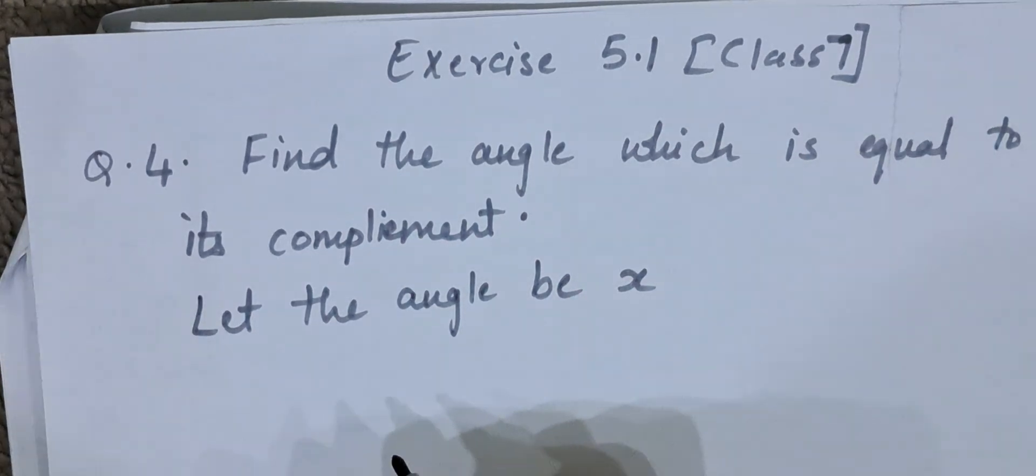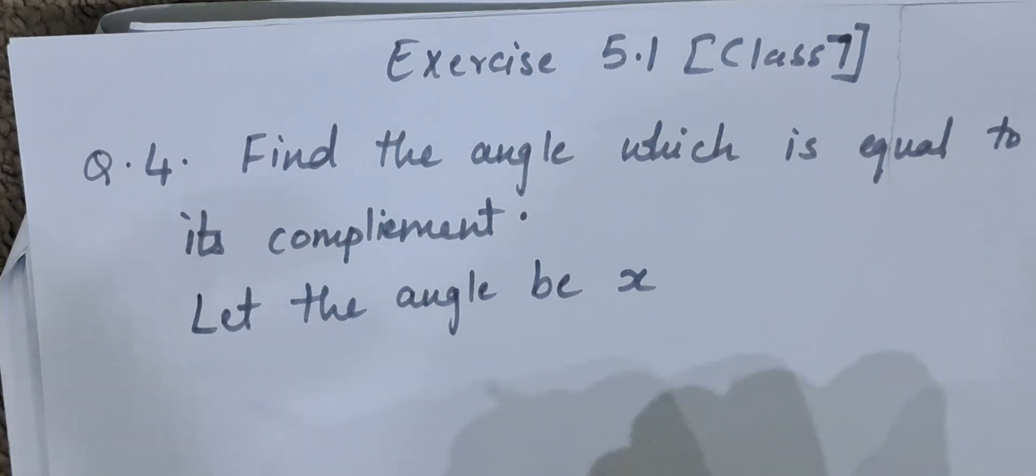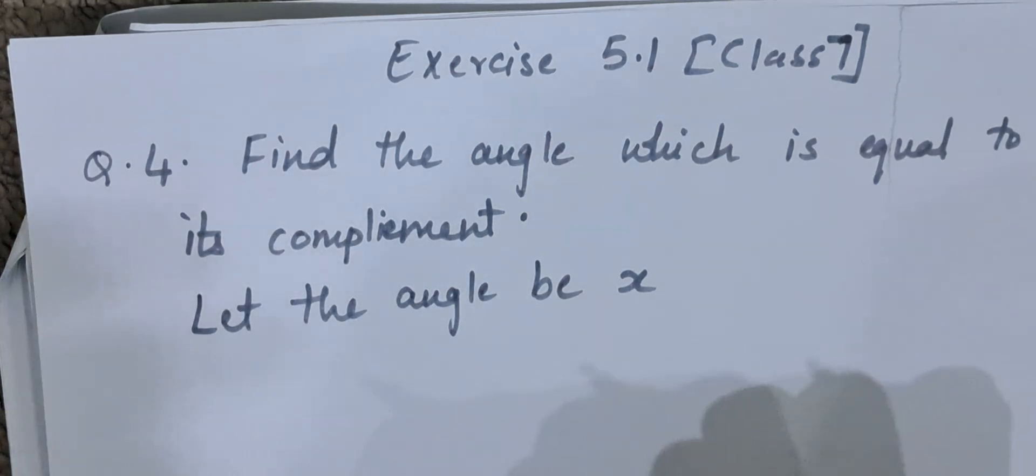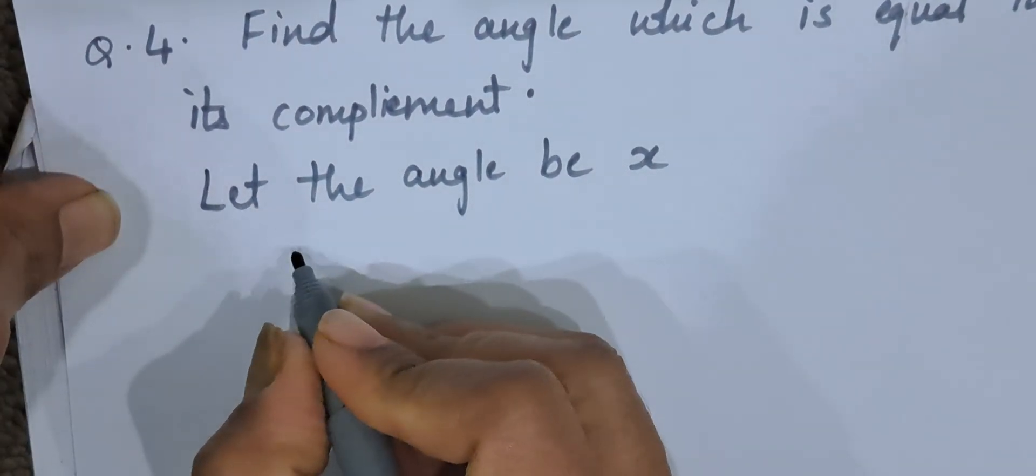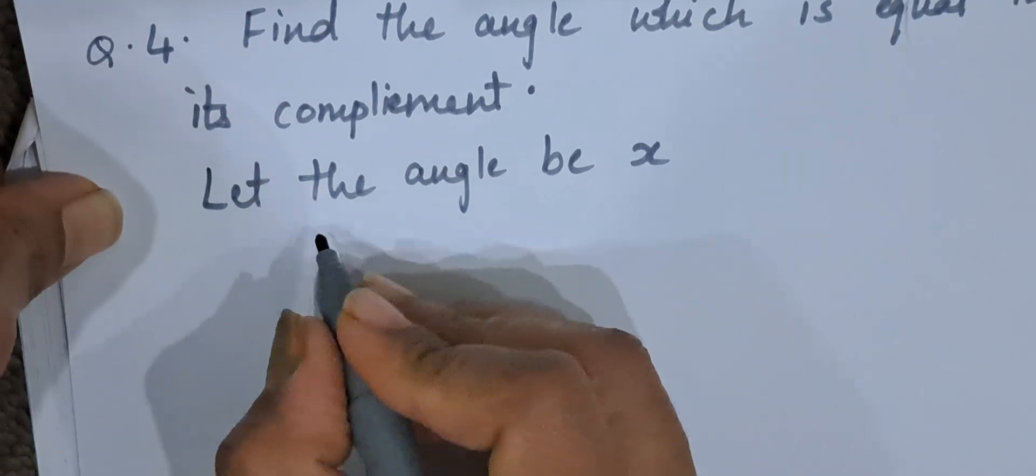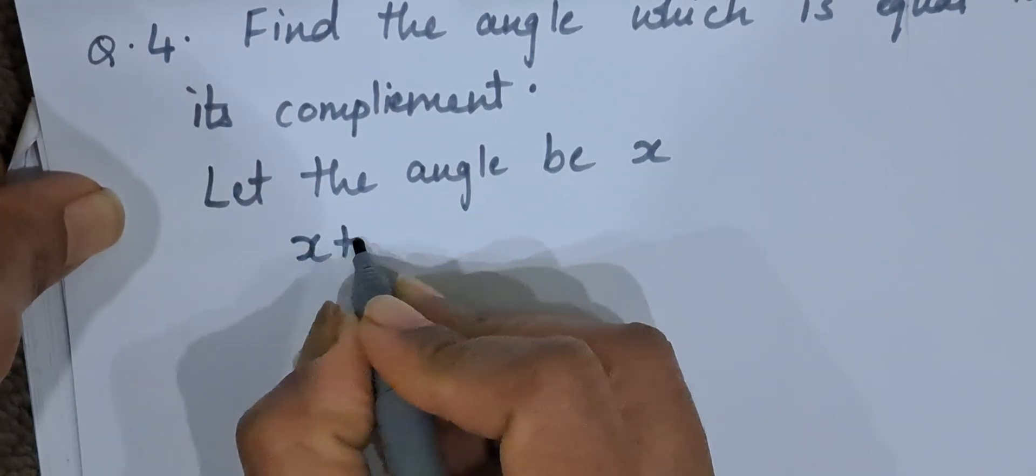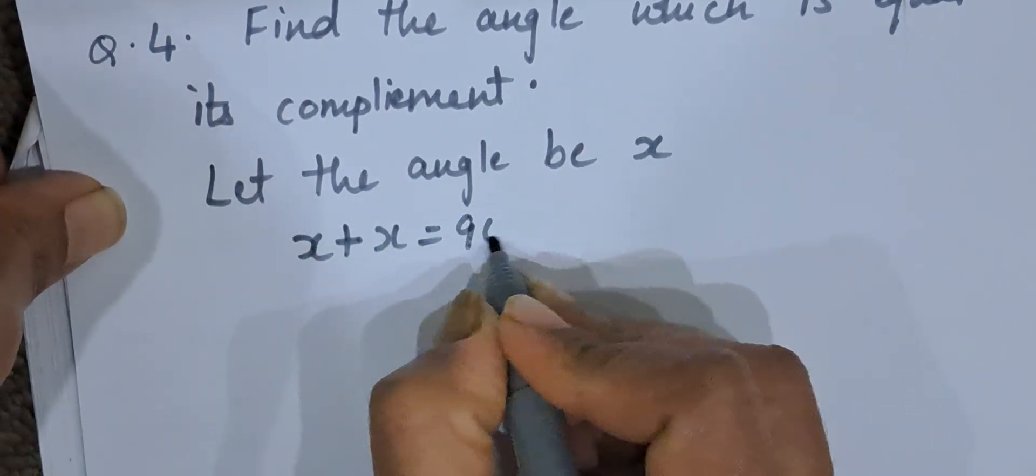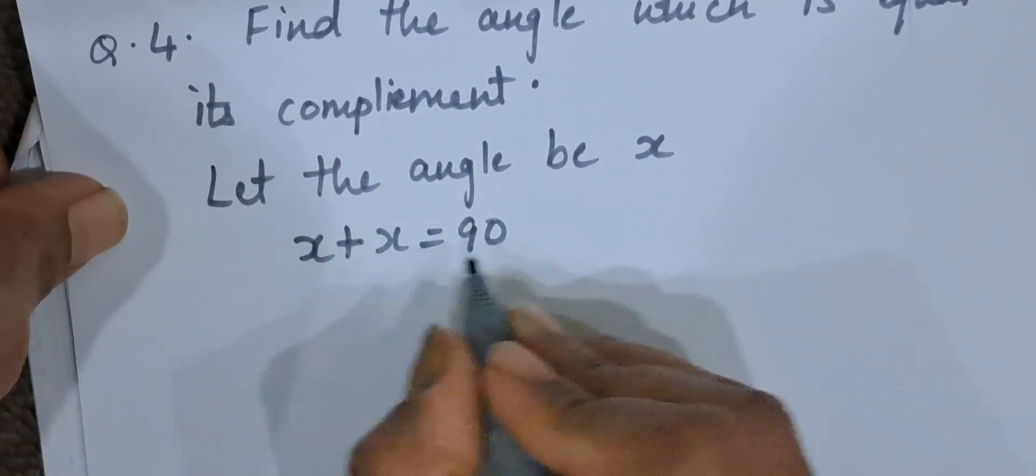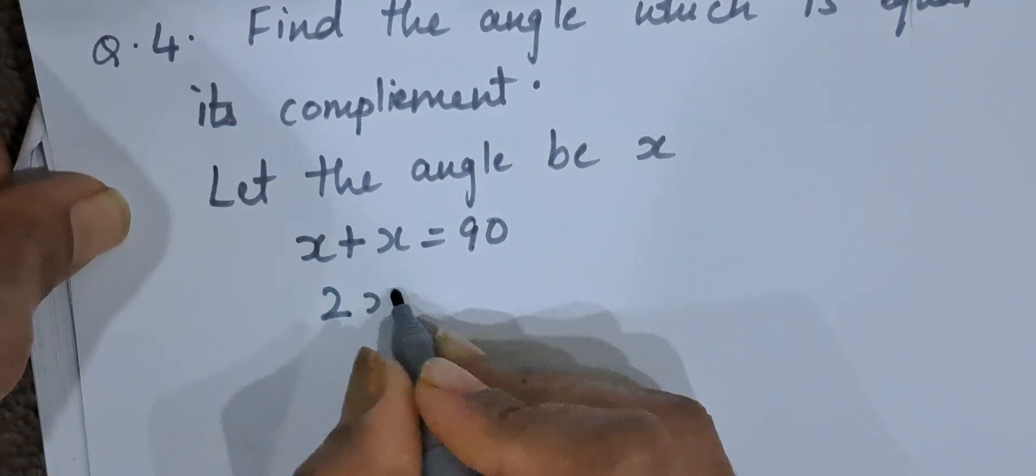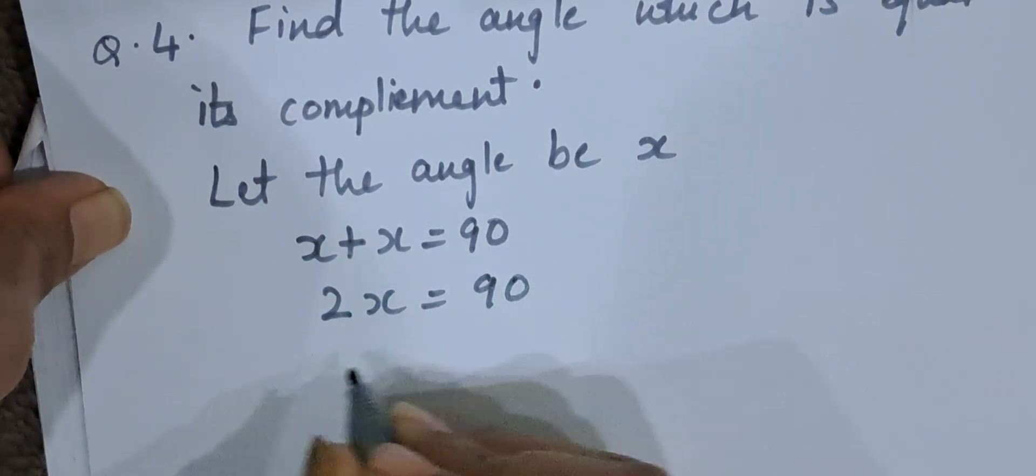Equal to its complement means what? That angle plus one more angle, that same angle together will give us 90 degrees. So we can write two angles are complement if their sum is 90 degrees. So we can write x plus x is 90 degrees because they have to be equal. So x is equal to x. x plus x is 90 degrees. So that will be 2x is 90 degrees.